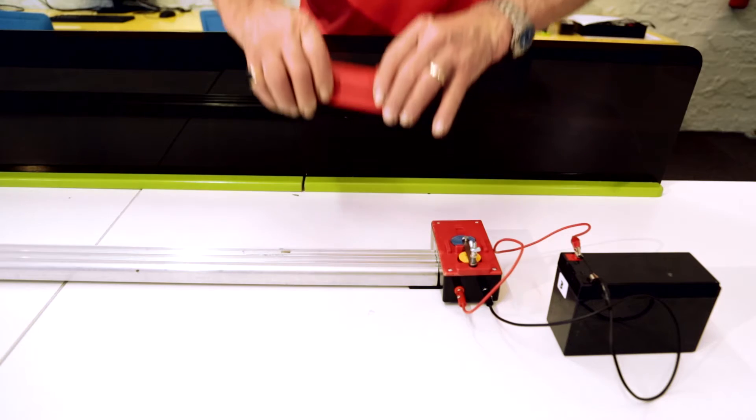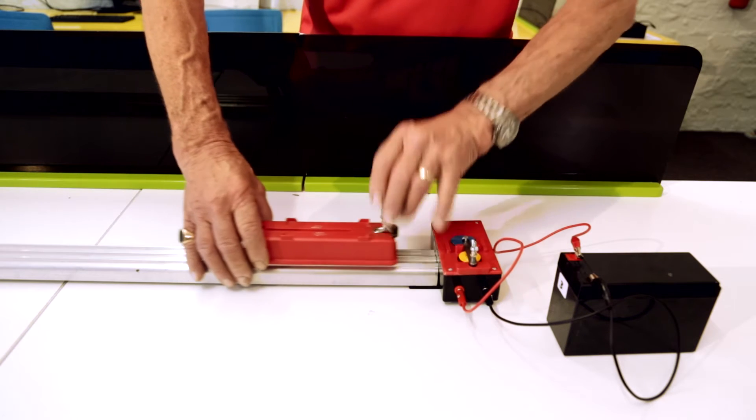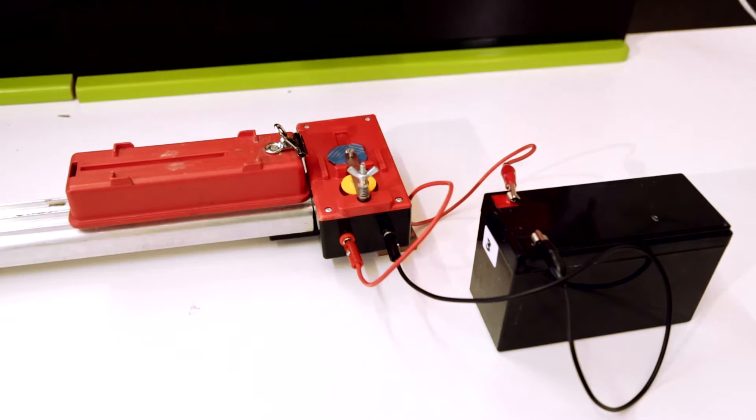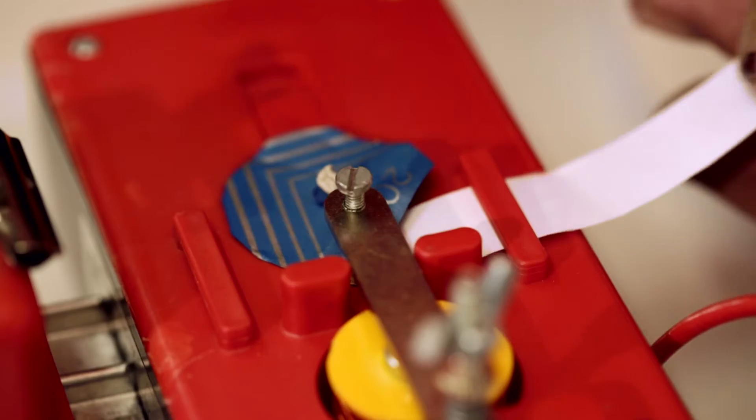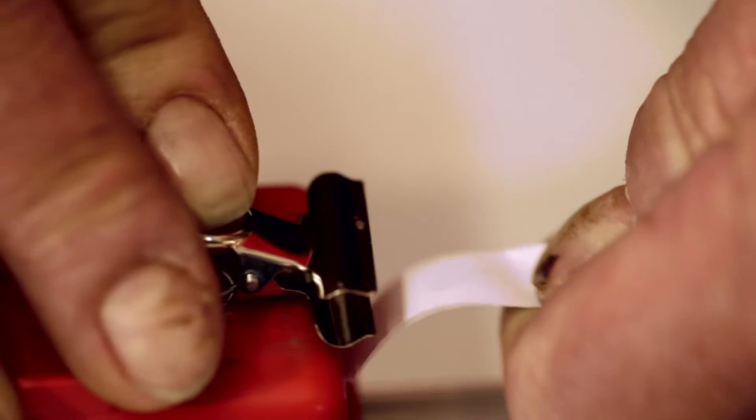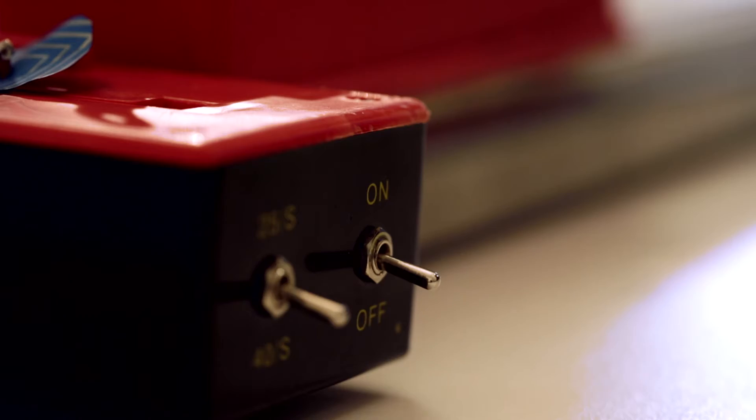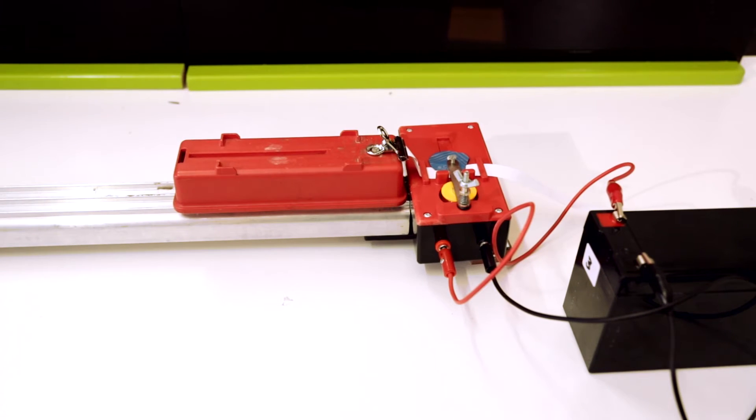The method: set up the trolley of known mass capital M on the rail. Feed a length of ticker tape through the timer and attach it to the rear end of the trolley. The timer has been set at 40 Hertz. This will give 40 dots per second.